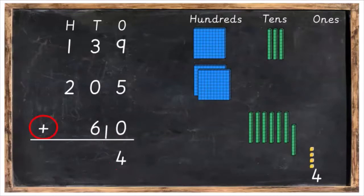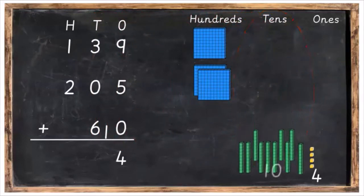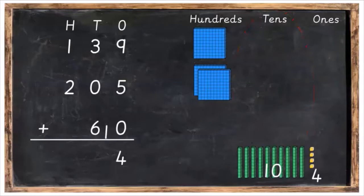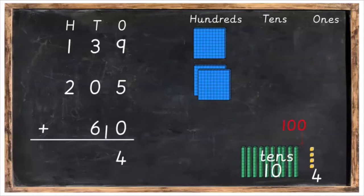Next thing we're going to do is add the tens. So we're going to add six plus zero plus three plus the one that we carried over. So six plus three is nine plus one more is ten. So we've got ten tens now in the tens column. And that's too many because you can only have nine tens in the tens column. But what is ten tens? Well, let's count them up. Ten tens is actually 10, 20, 30, 40, 50, 60, 70, 80, 90, 100.